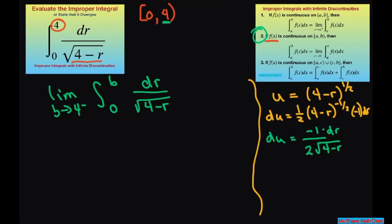So when you write this limit out we're really going to get the limit as b. We could also cross multiply. This is negative 2 du equals dr divided by 2 square root of 4 minus r.